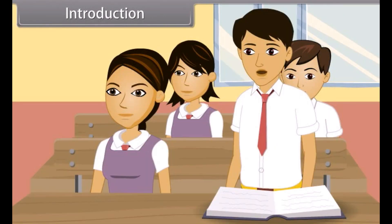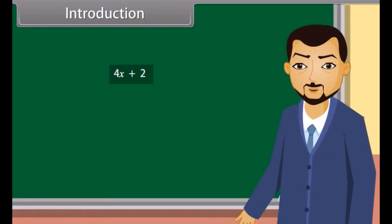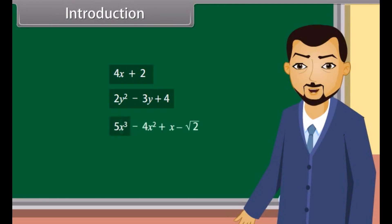This is a polynomial in the variable x of degree. You are right. Similarly, 2y squared minus 3y plus 4 is a polynomial in the variable y of degree 2, and 5x cubed minus 4x squared plus x minus square root 2 is a polynomial in the variable x of degree 3.